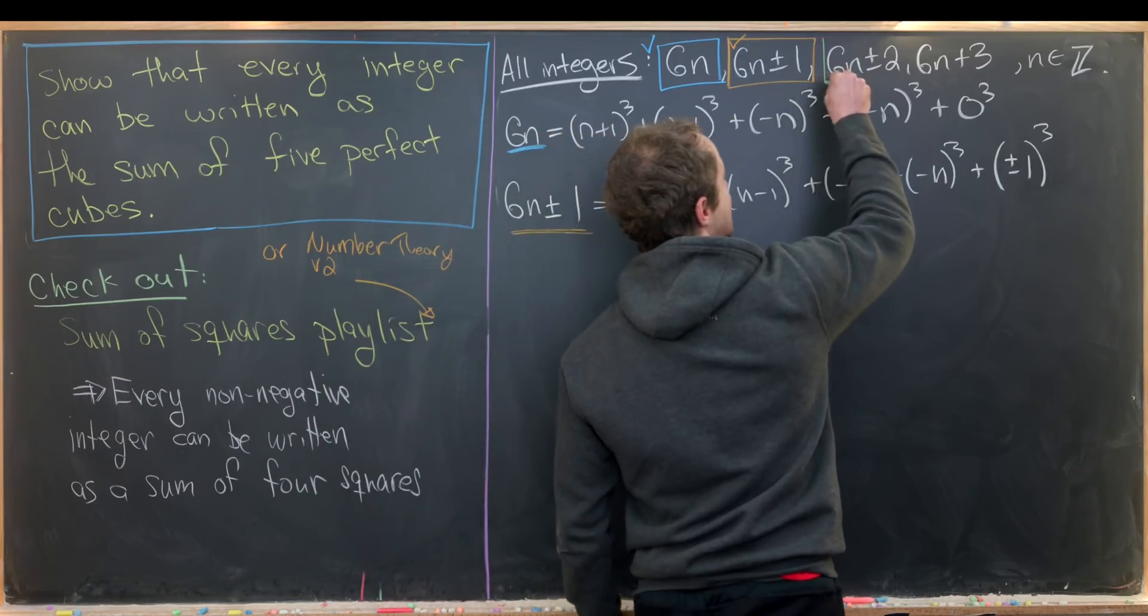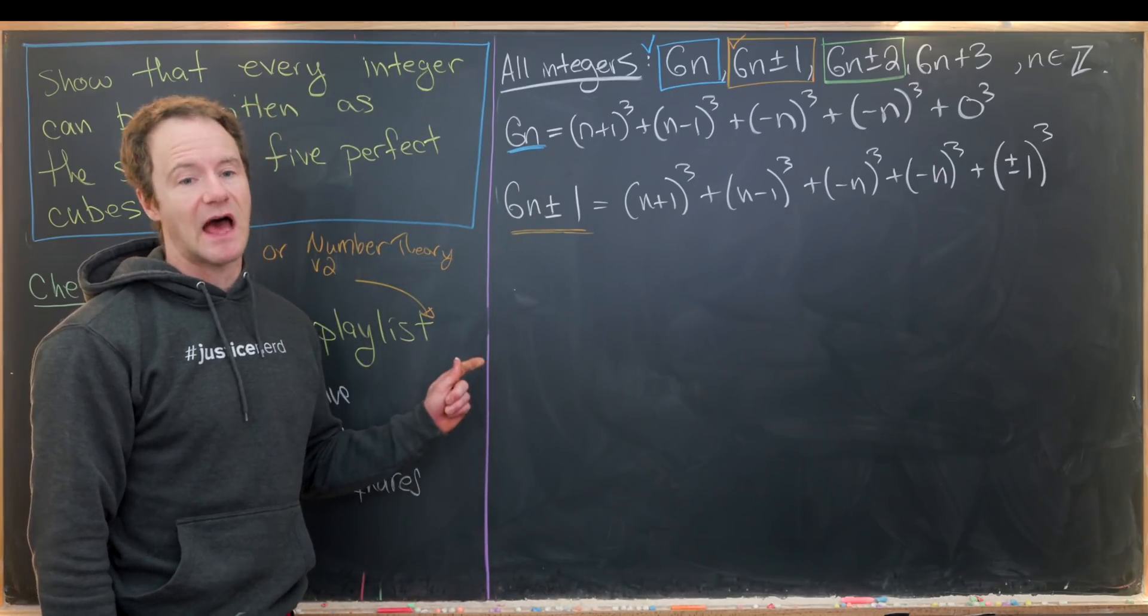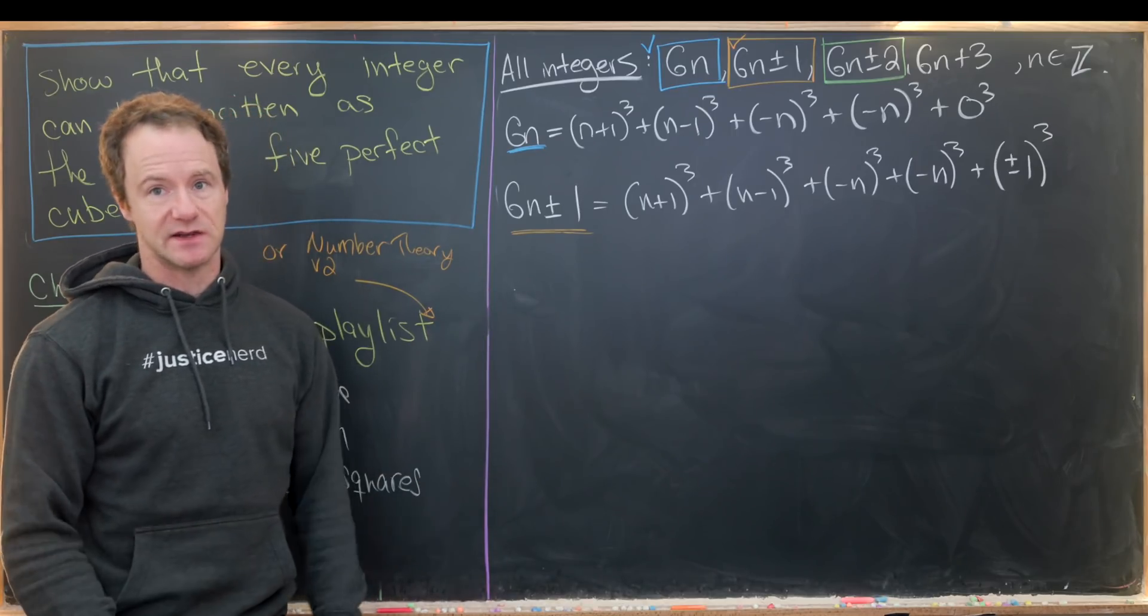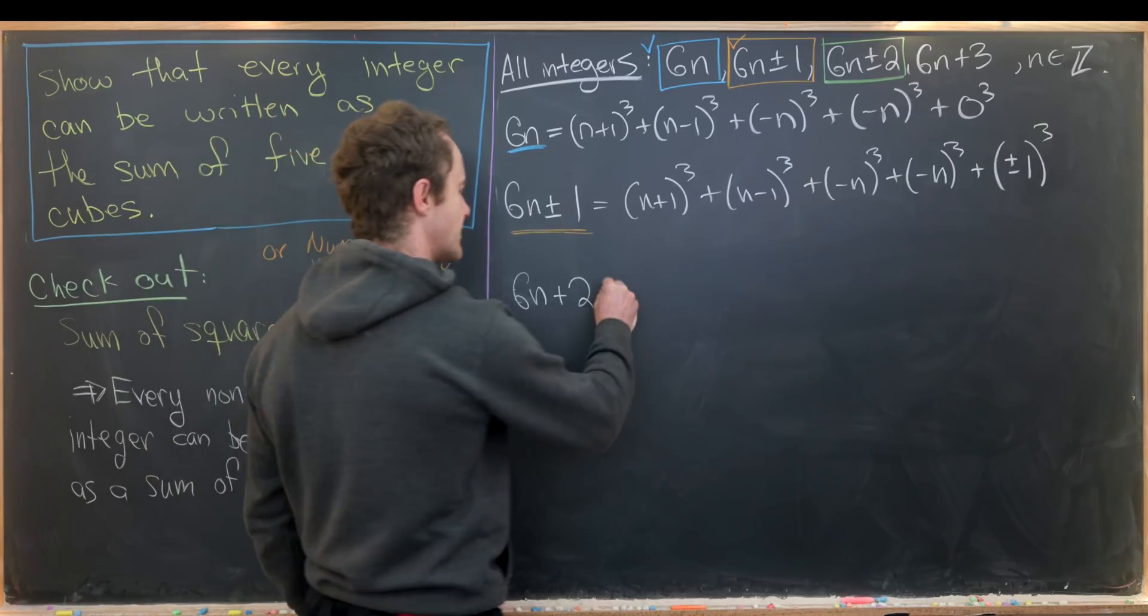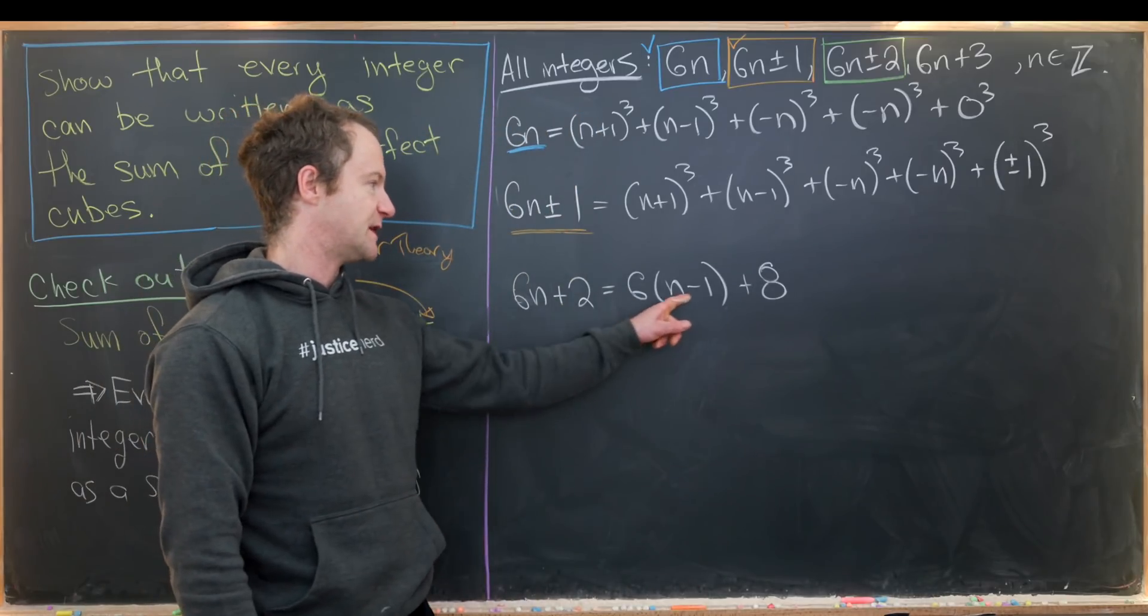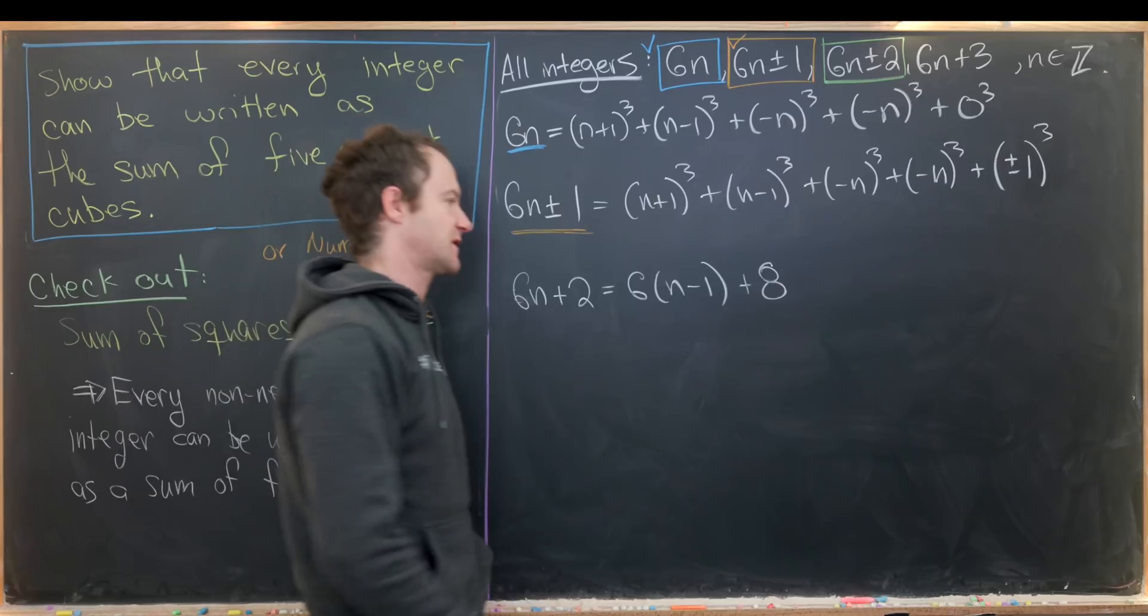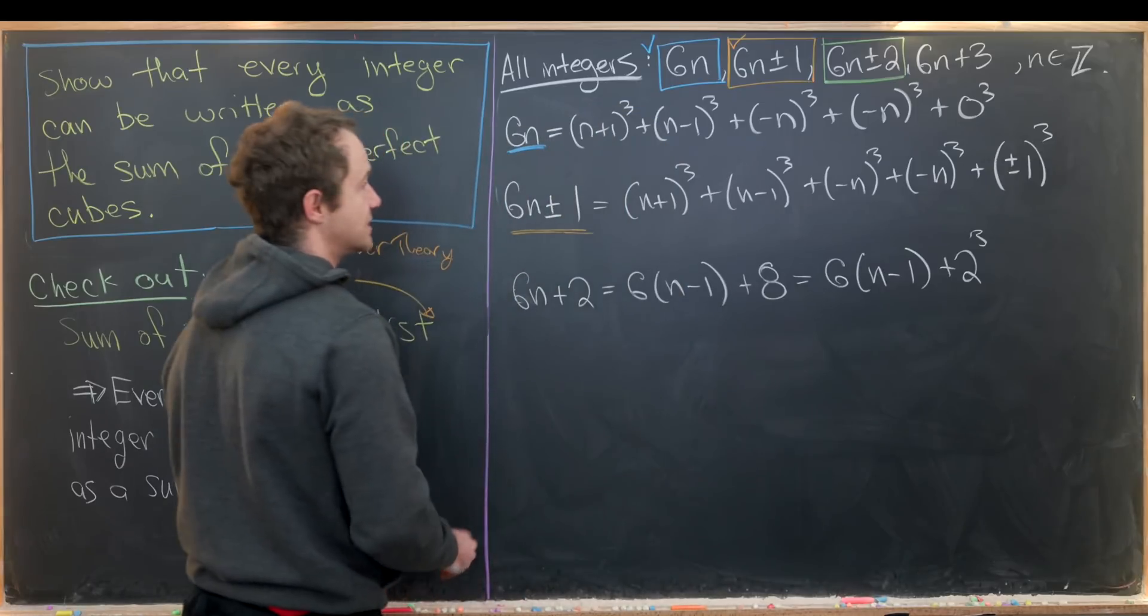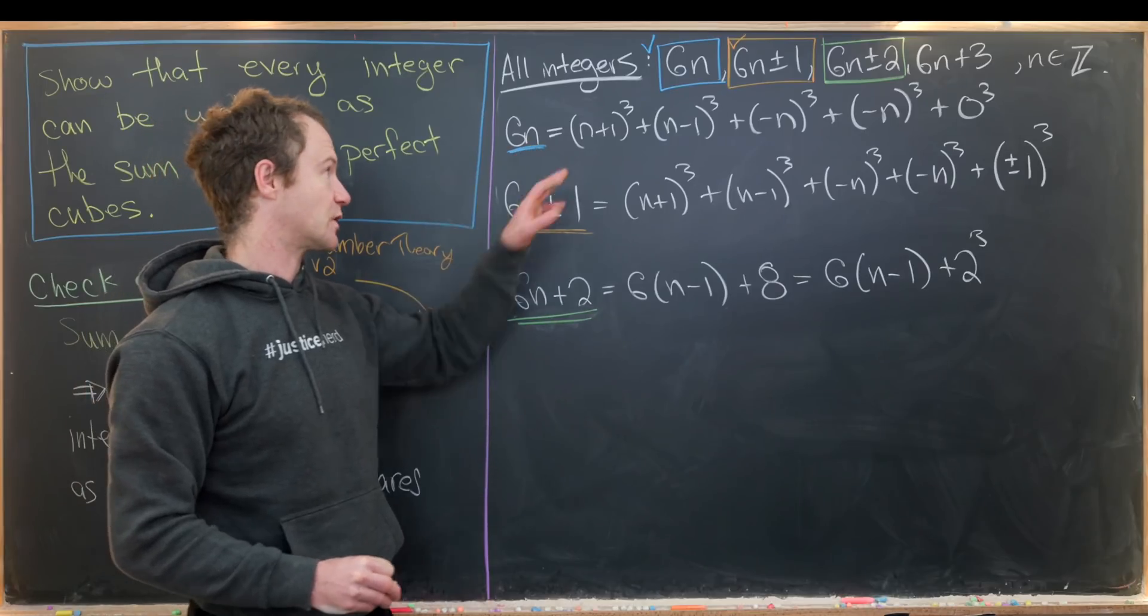Now let's move on to this next case when we have 6n±2. We'll just do the 6n+2 case. I'll leave as homework for you to do a very similar thing for the 6n-2 case. So 6n+2. Notice we can rewrite this as 6(n-1) + 8. That's because we've got a -6 here and a +8 that'll be +2. This is advantageous because 8 is a perfect cube, it's 2³. So this is 6(n-1) + 2³.